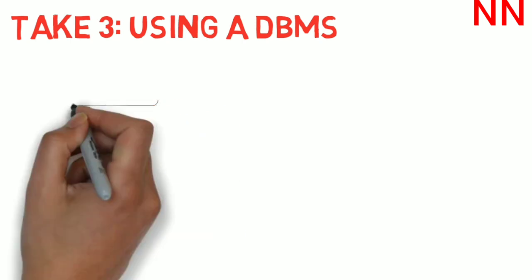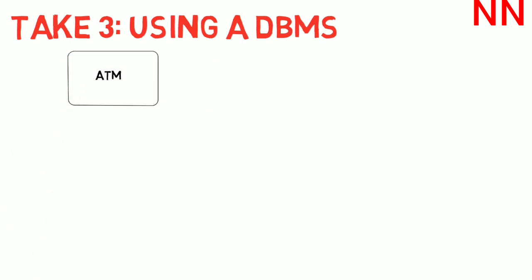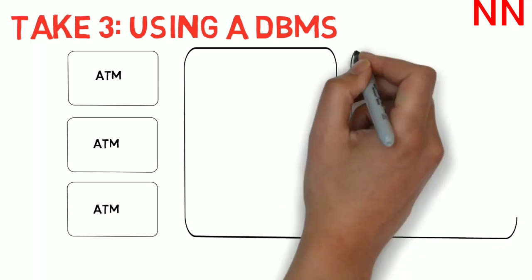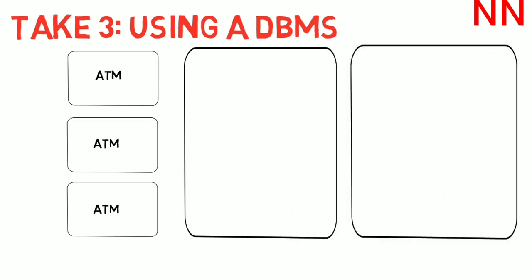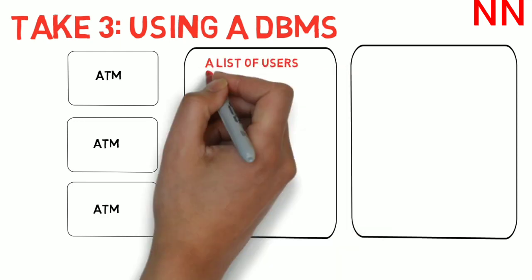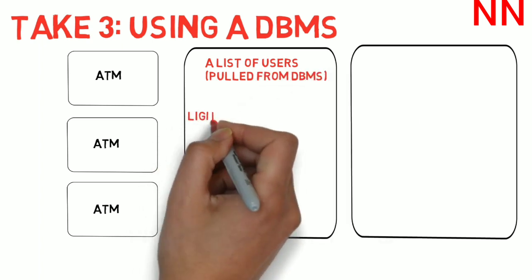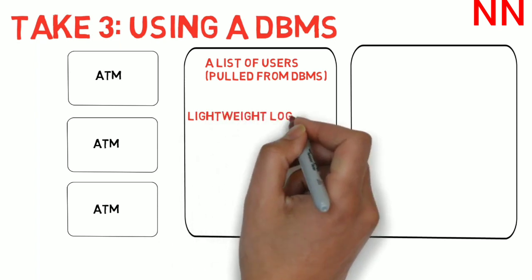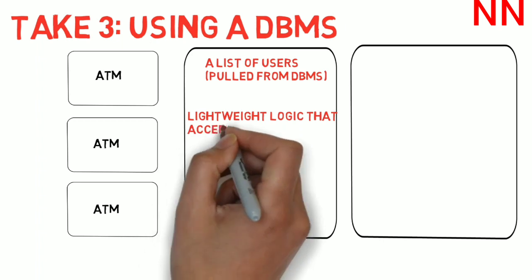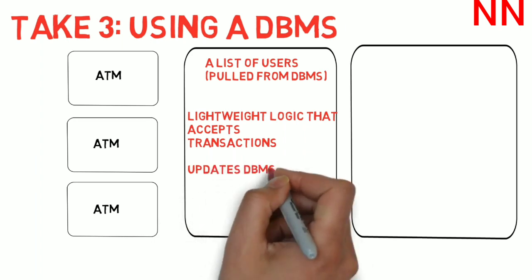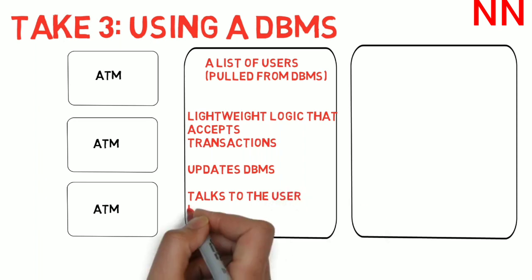Here's how this would work. You would have a bunch of different ATMs just as we had in the previous case. These, as we already mentioned before, act as clients. Then you would have a layer which is called a server, which accepts requests from the clients. That is, it accepts data regarding the transactions, whether they are withdrawals or deposits and what is the amount, which account are they affecting and so on. It also maintains a list of users pulled from the database. It accepts the transactions and updates the database with the changes. It also talks to the user if needed.